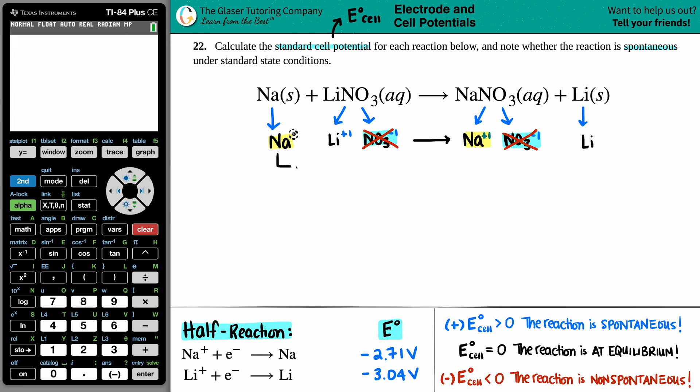And then on the flip side, you have Li plus one, and then it just becomes a lithium. Same idea happens here. No charge in the upper right-hand corner, that's a zero. So these are going together.